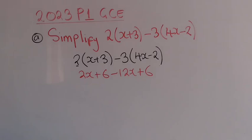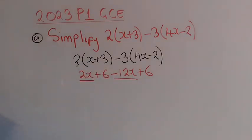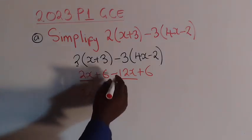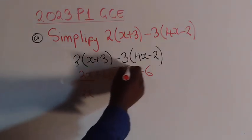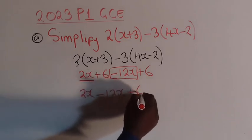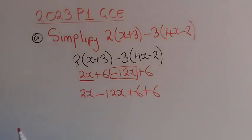Now from there you can collect the like terms. So the like terms are the ones that have the variable x. So you can see 2x and minus 12x, these are the like terms. So we collect them, we write 2x, we will pick with the sign, negative 12x, then plus 6, plus 6. So for this 6 and this 6, they also like terms because they don't have any variable.